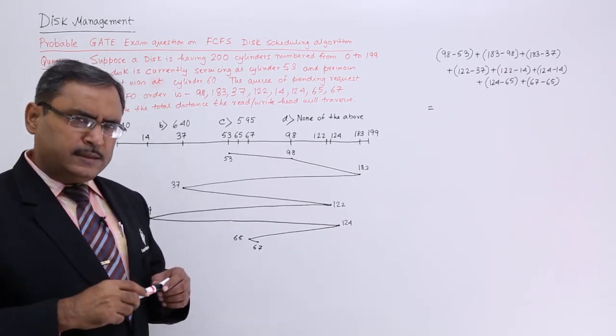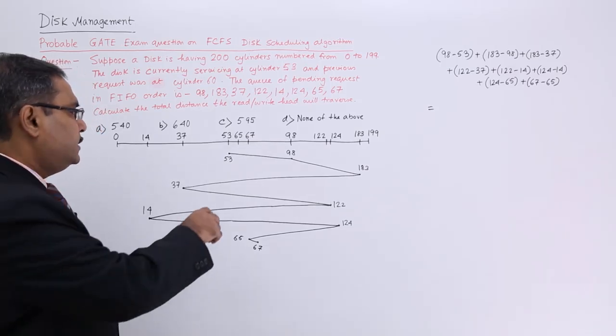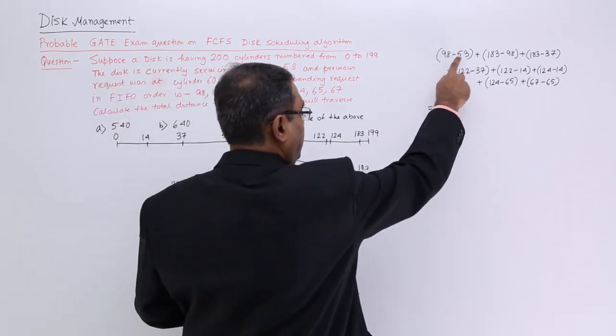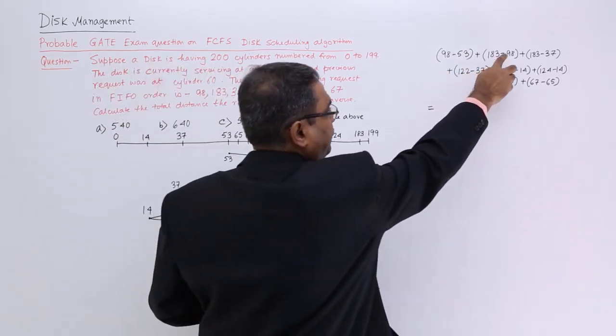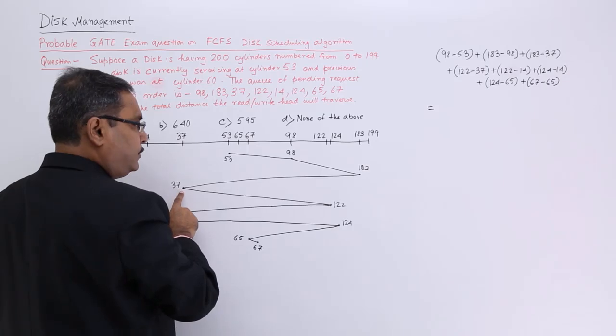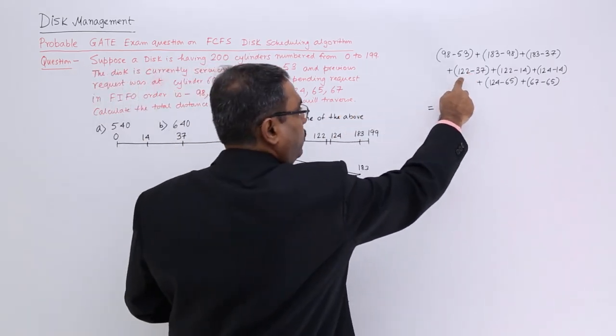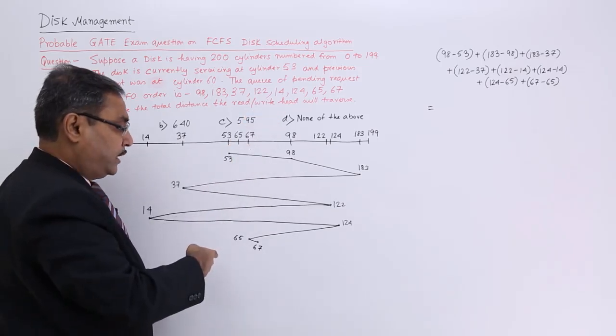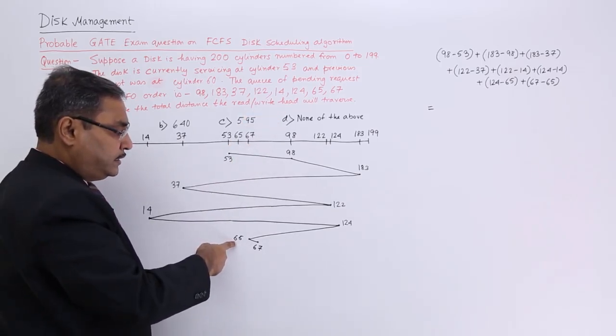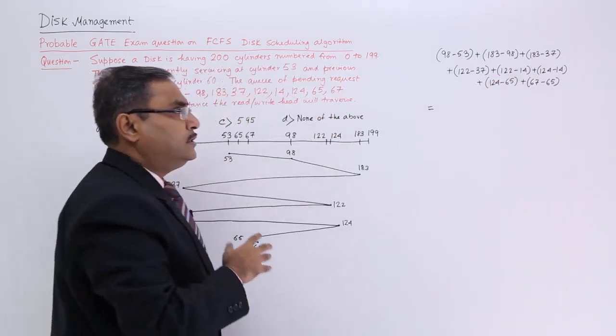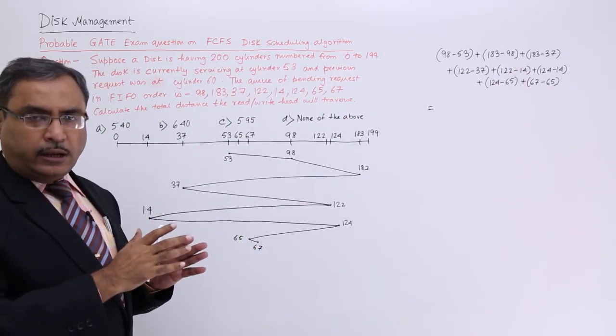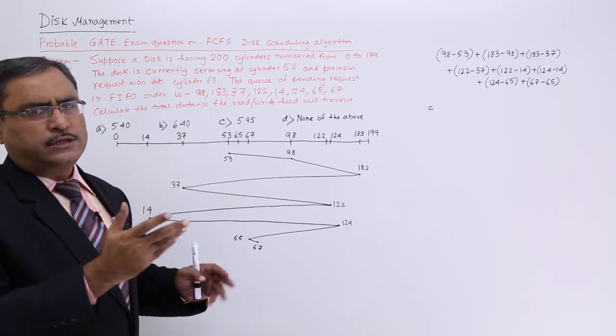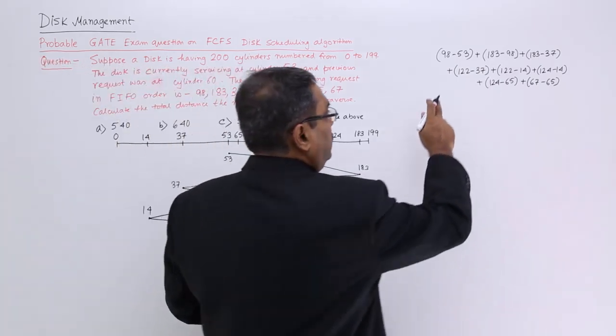So how to solve this one? Very simple, only you are going to perform some algebraic operations. So 53 to 98 total movement, then 98 to 183, then 183 to 37, in this way I have written all of them. You can easily find, you can do the check that the last one will be 65 to 67. So I am just doing the subtraction to calculate the disk movement in between adjacent cylinder numbers, and then I shall go for the addition.